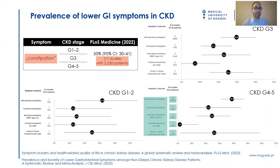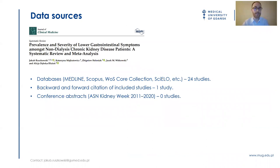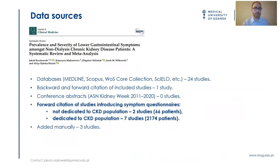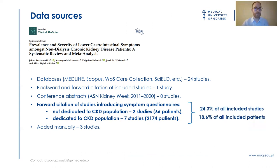So how did we succeed and how did we get additional data that had been overlooked in the previous systematic review? The answer lies in data sources. Besides a very broad database search and a conventional citation chasing of included studies, we performed citation chasing of papers that introduced questionnaires used to assess symptoms in patients. Forward citation chasing of these articles added data for more than 2,000 patients, nearly 20% of all included studies in our analysis.